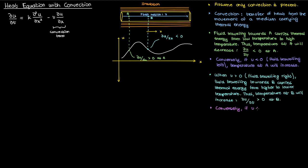The opposite applies if v were negative. Fluid traveling towards B will be carrying energy from a lower temperature to a higher temperature, so the temperature at B will tend to decrease.